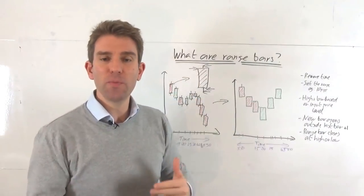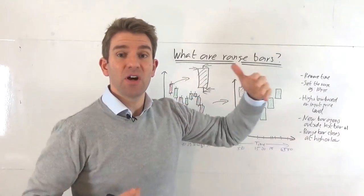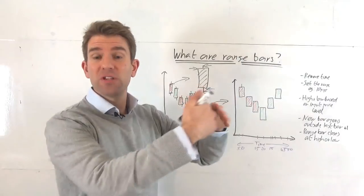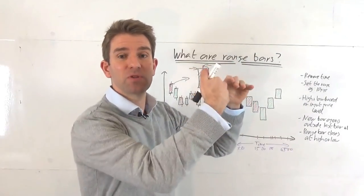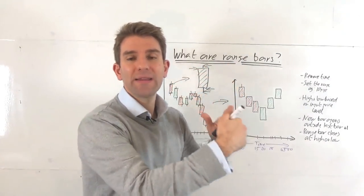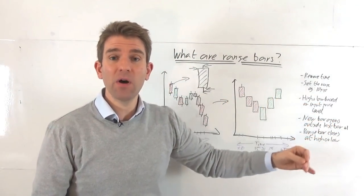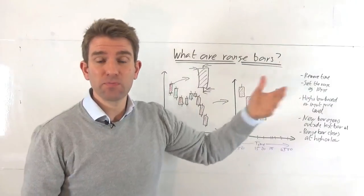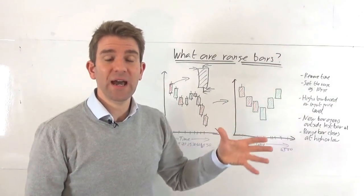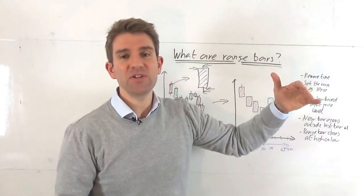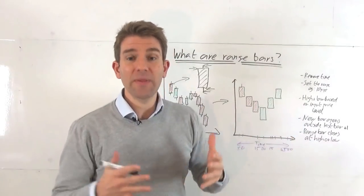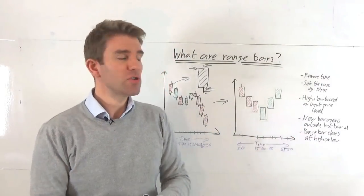So if you can imagine at the open, we move 20, 30, 40 pips, you're going to get four candles printing all in the same direction. Then it starts to quiet down at lunchtime. And let's say it sits in a six pip range for an hour, then that candlestick is not going to finish printing. It's not going to close that candlestick until it finally reaches 10 pips. So you're eliminating a lot of the time and that could be advantageous to you.